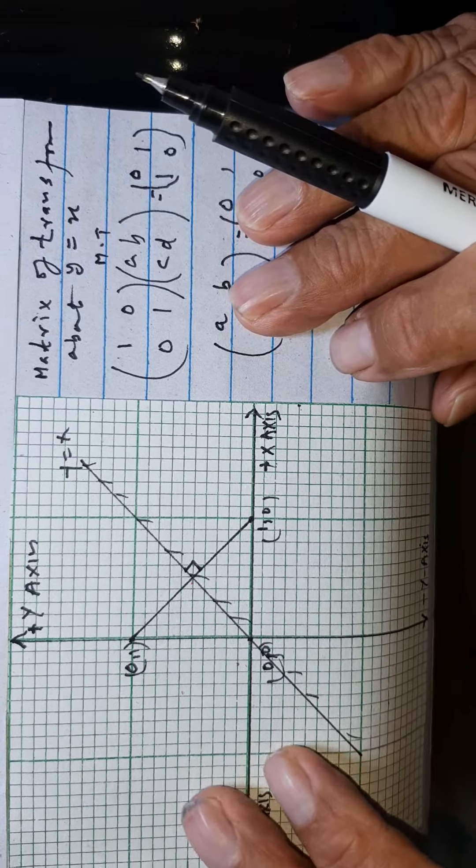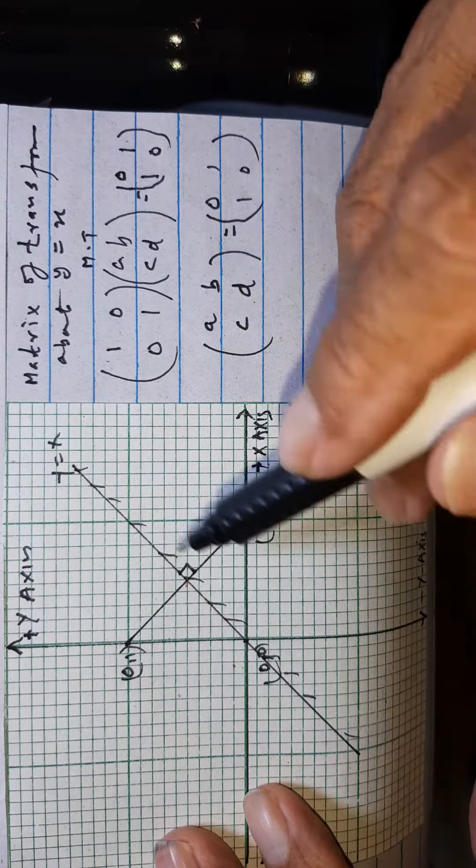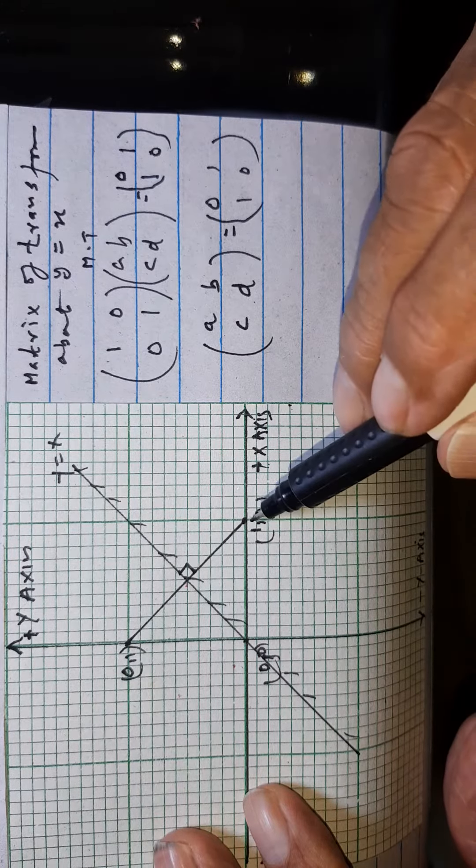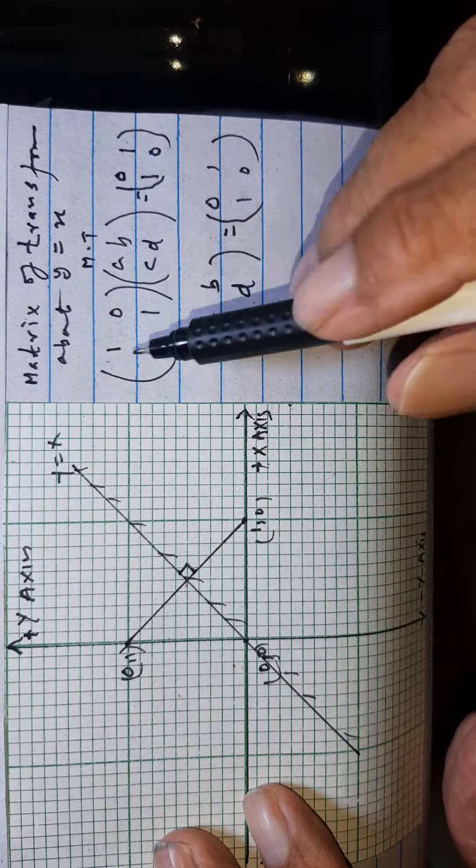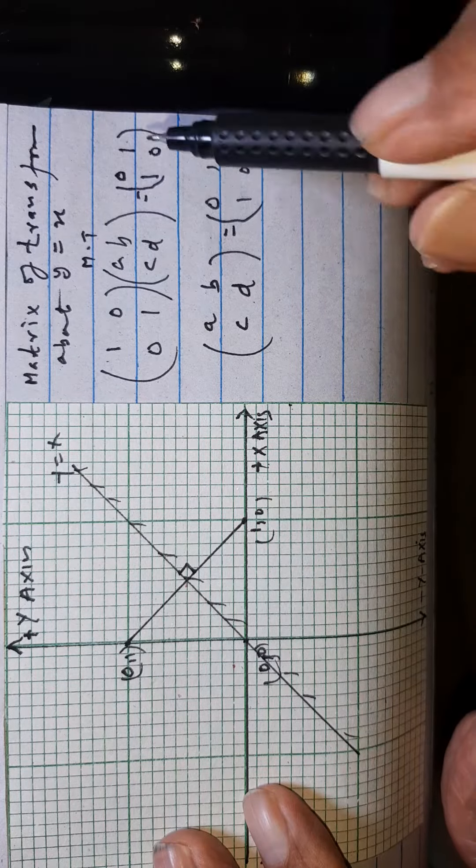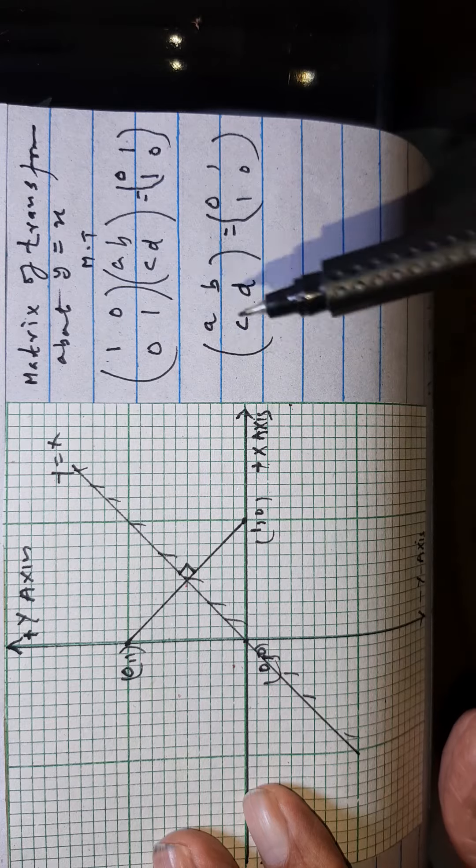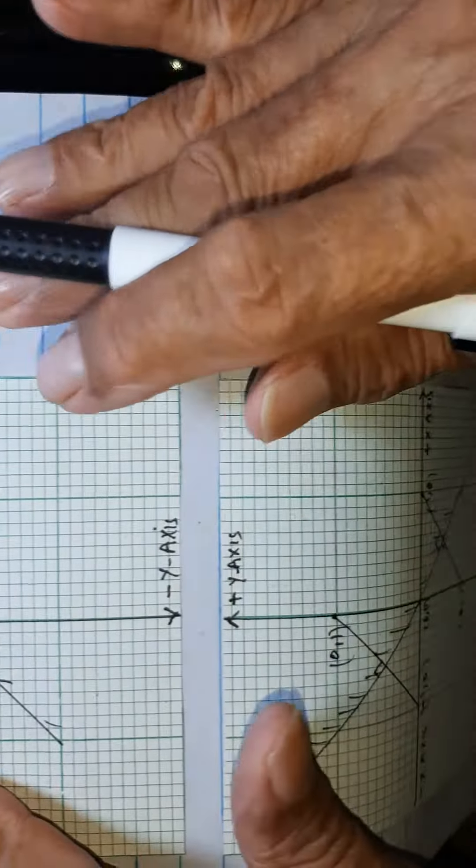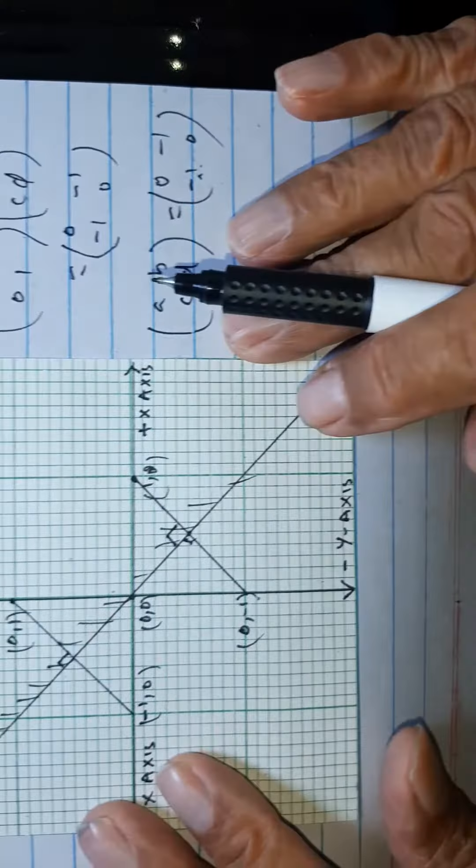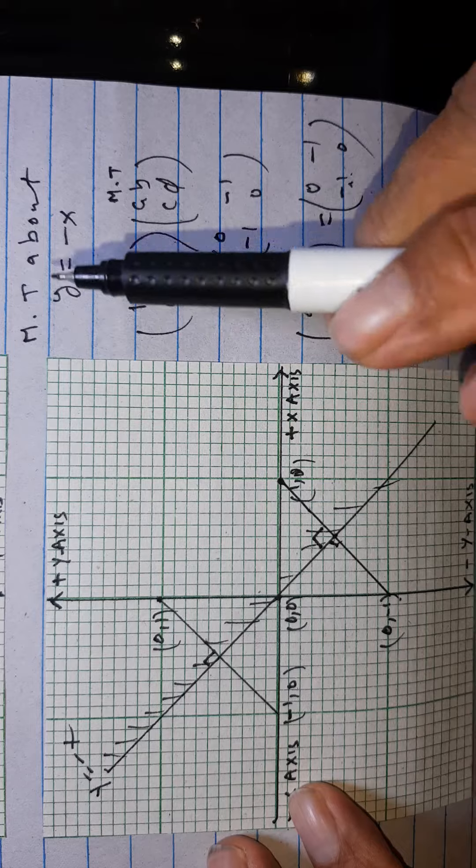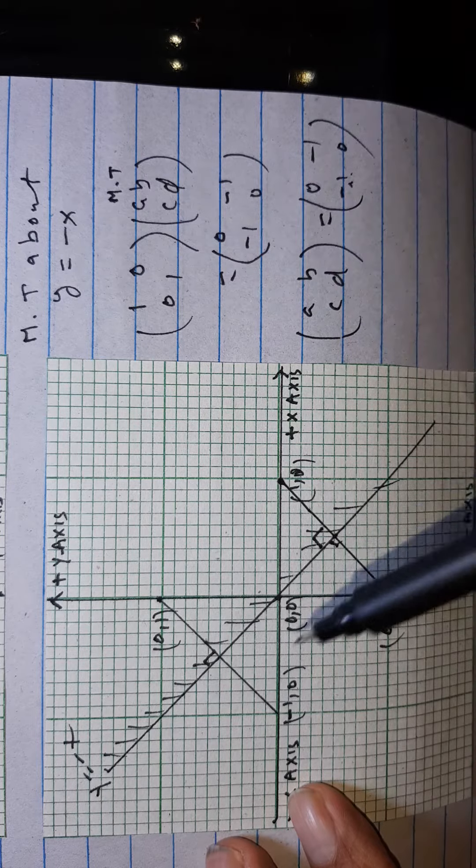Now here we have to find the reflection about y equals x. This 1 0 comes to 0 1, and 0 1 comes to 1 0. Therefore, the matrix of transformation will be...